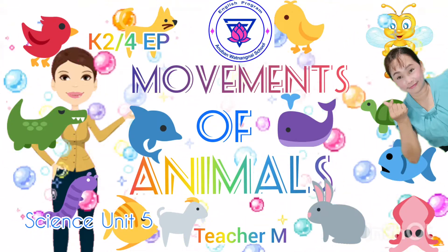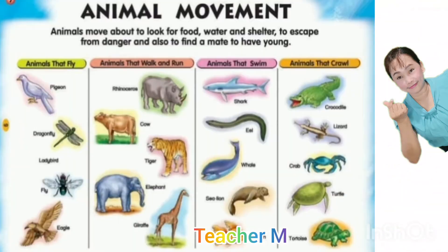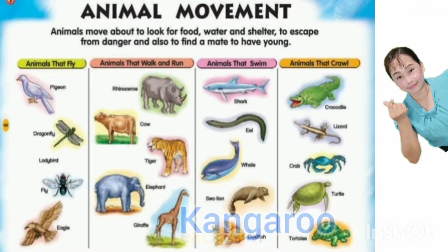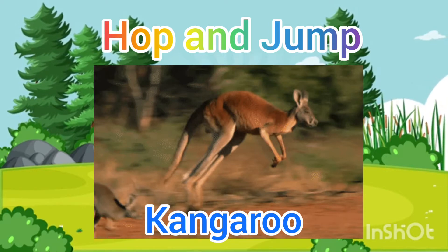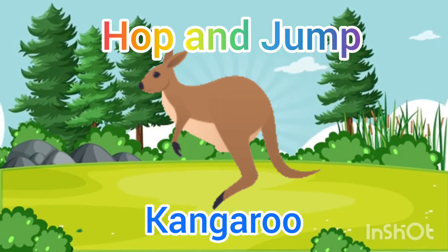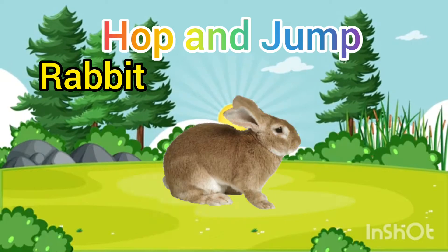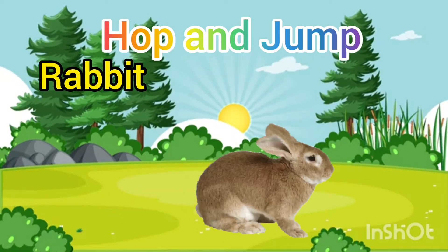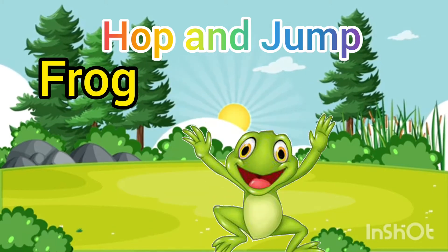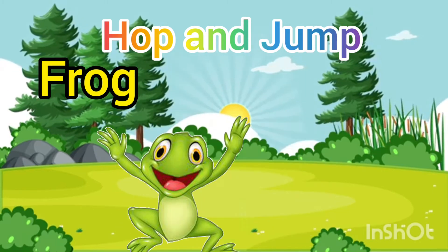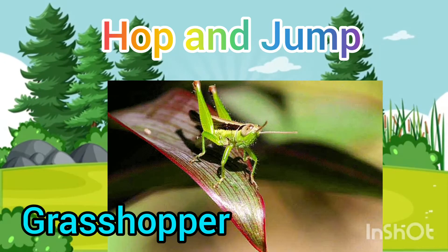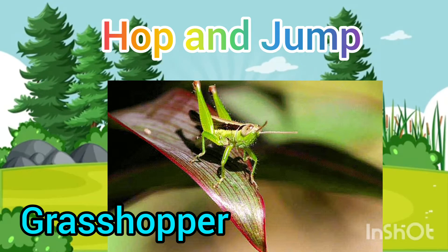Let's study movements of animals. Animals move differently. Kids, are you ready? Okay, let's learn together. Some animals hop and jump, hop and jump — like kangaroo, rabbit, frog, grasshopper.